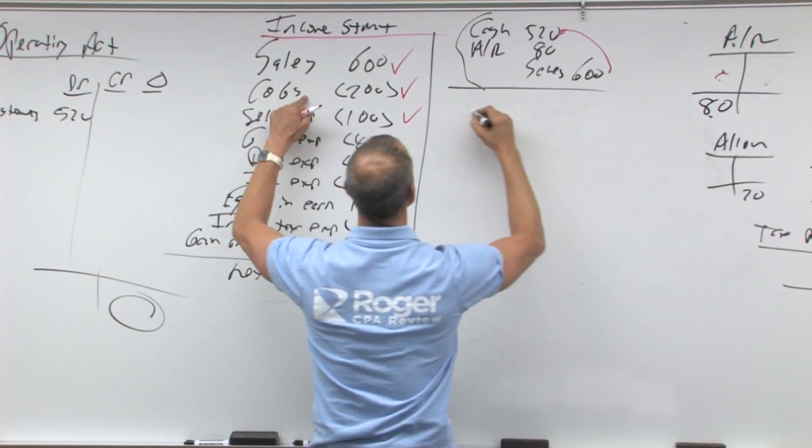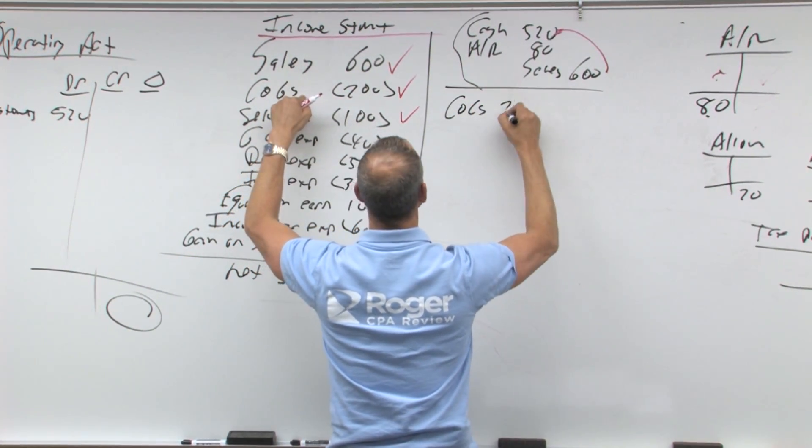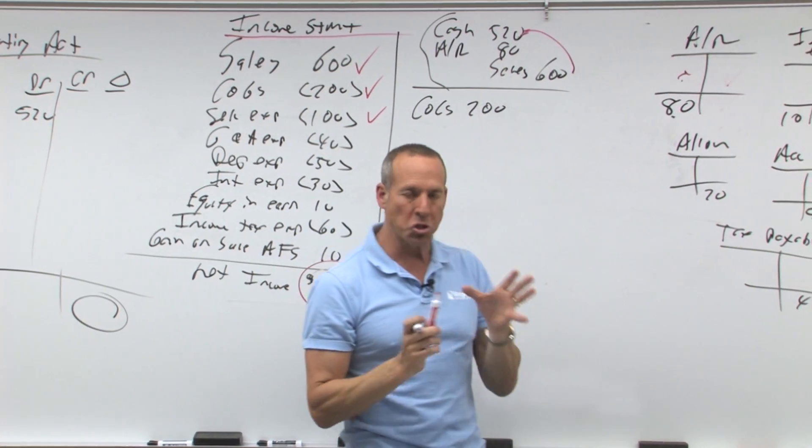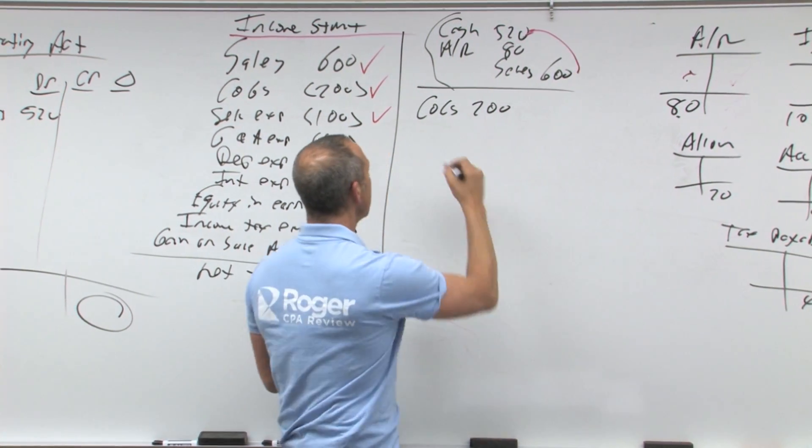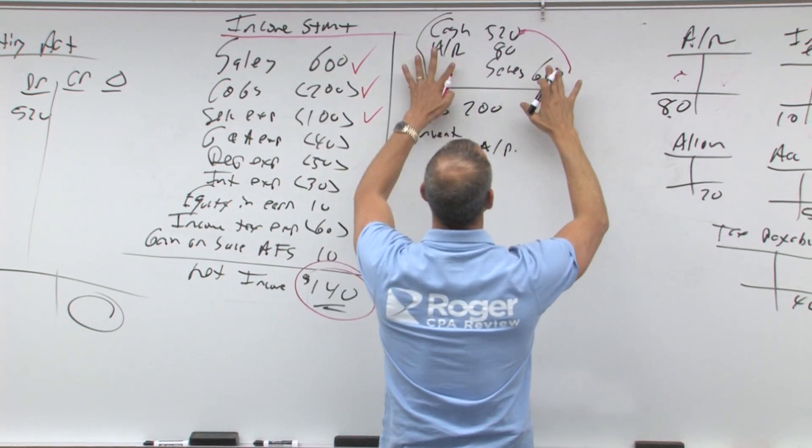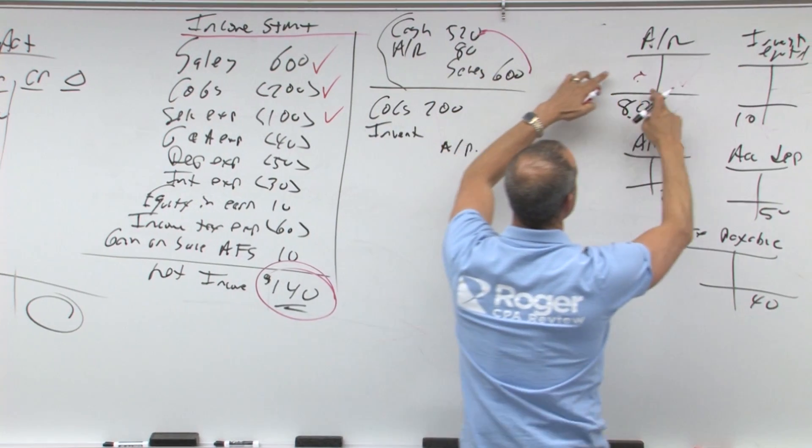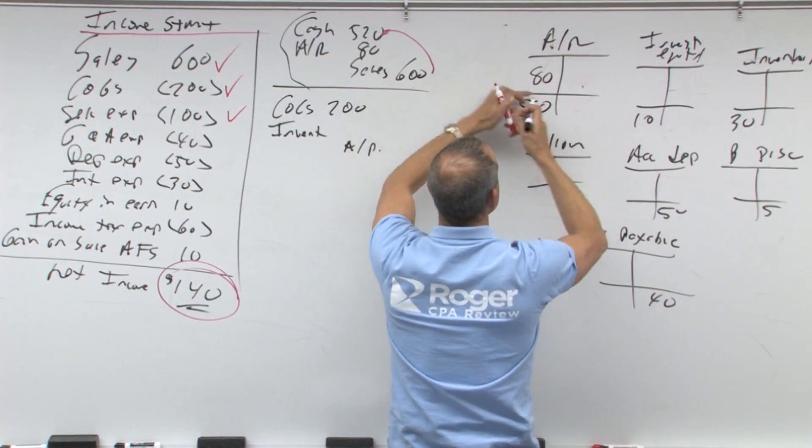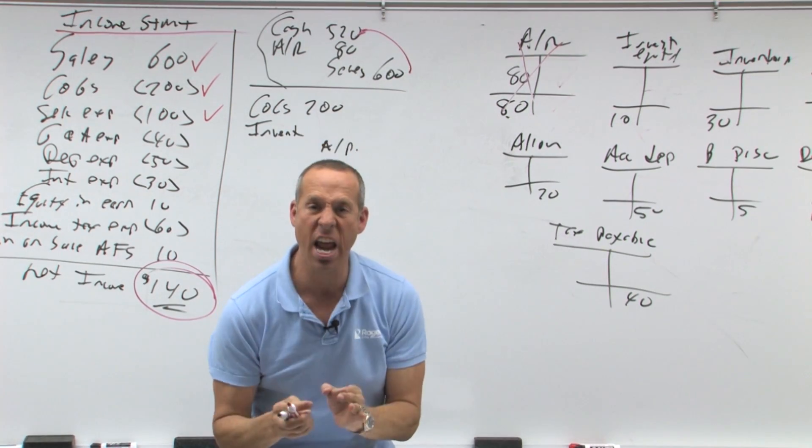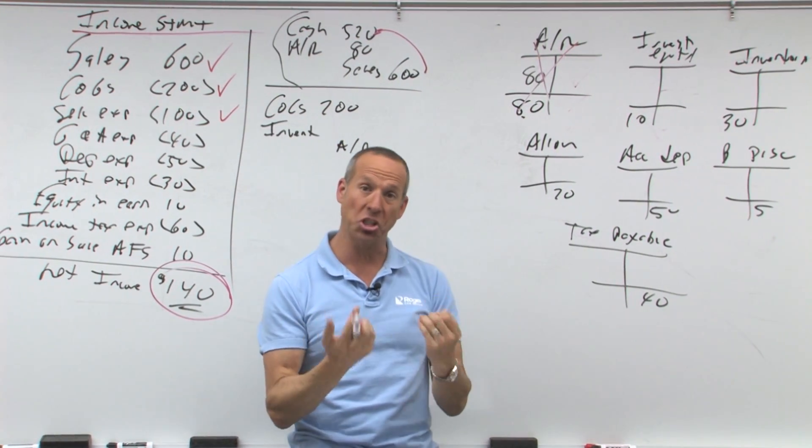Second item is cost of goods sold. So cost of goods sold is an expense, that's a debit. Now what would affect cost of goods sold? There's two things that affect cost of goods sold: inventory and accounts payable. So now let me go back to this first entry. I'm looking for a debit of 80, I just found my debit of 80, I'm done with that T account. So do you see how I'm accounting for the change, not the balance, it's the changes.